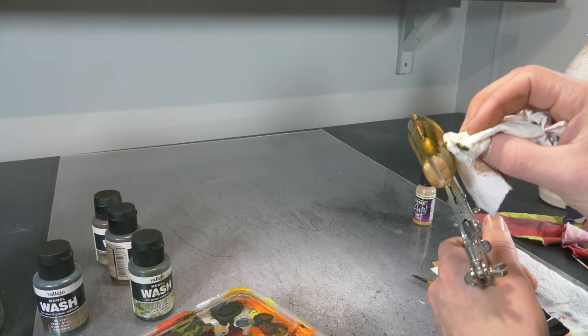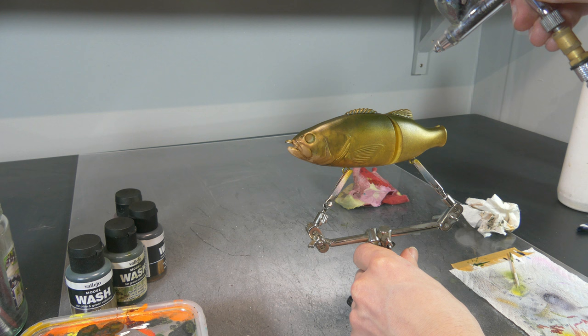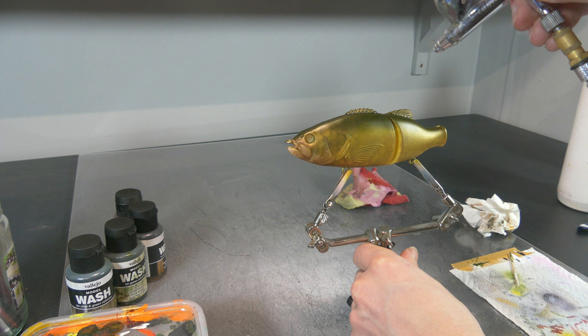Now a peacock bass has a green back, so that's why we're going to use a dark green wash from Vallejo, and with that we're going to create our first green texture on top of the back and a little bit on the sides of the lure.